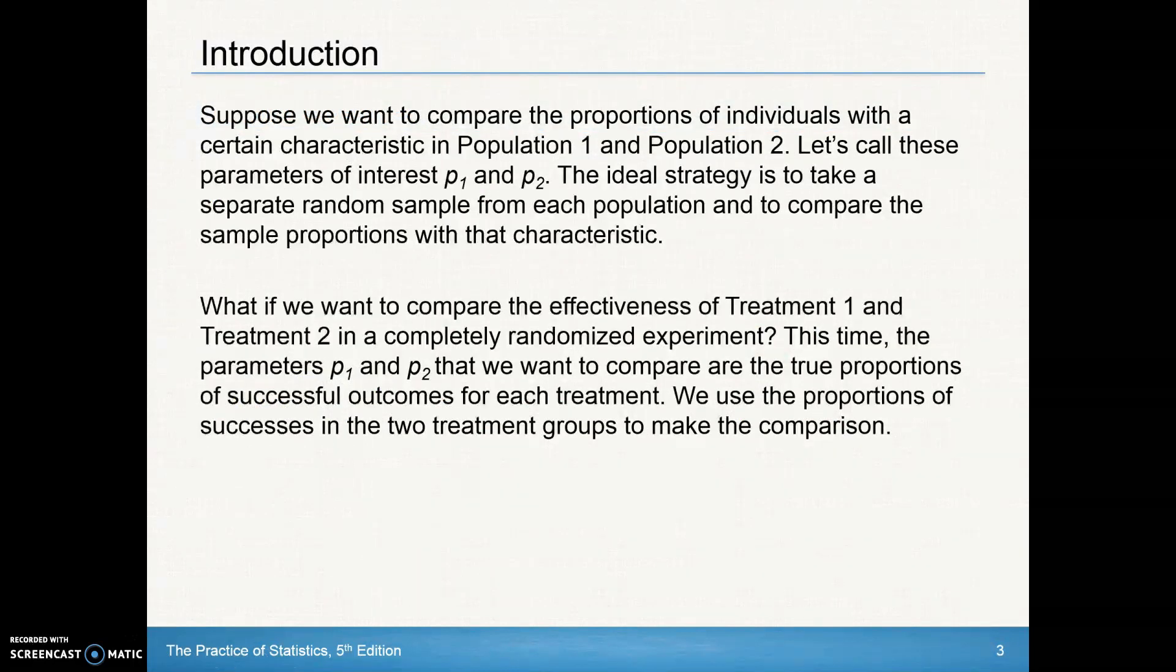Suppose we want to compare the proportions of individuals with a certain characteristic in Population 1 and Population 2. We'll call those parameters P1 and P2. The ideal strategy is to take a separate random sample from each population and compare the sample proportions. This is different than the matched pairs t-test from Chapter 9. We've got two completely different populations that we're comparing.